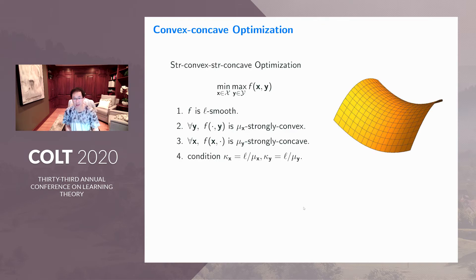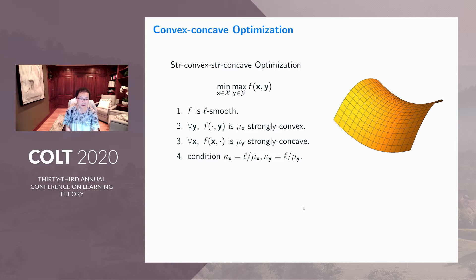Now we can ask the same question not only for minimization problems but also for minimax problems, where essentially you have two players trying to play against each other. We typically consider a strongly convex, strongly concave setting, which is a very classical problem. The standard assumption is f is again L-smooth. When you fix y, function f is mu_x strongly convex in x, and when you fix x, it is mu_y strongly concave in y. So now the key quantities become two condition numbers: kappa_x and kappa_y, which are the ratios between the smoothness and the strong convexity/concavity parameters.